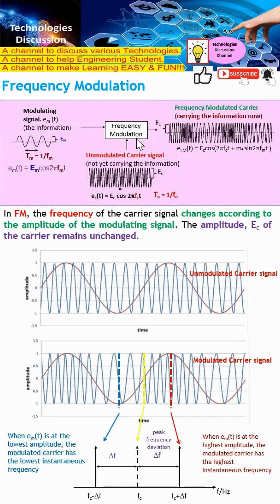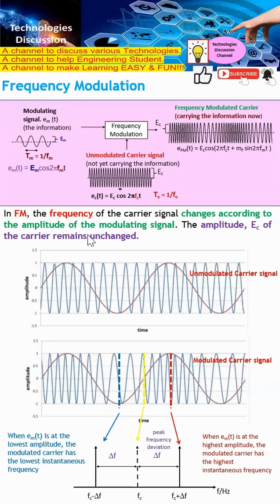So what is modulation? In simple definition, modulation is a combination of the modulating signal plus the carrier, and in this particular case they form the frequency modulated signal. In FM, the frequency of the carrier changes according to the amplitude of the modulating signal, while the amplitude of the carrier remains unchanged.